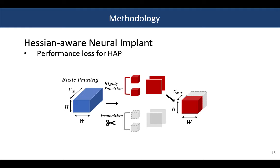In HAP, we sort the channels from most sensitive to least sensitive. For target model size or FLOPs, we have to prune model channels that are relatively insensitive. This approach works great, as long as all these channels are extremely insensitive.